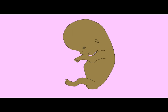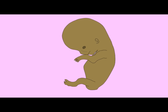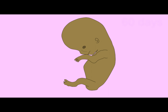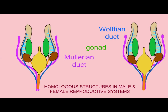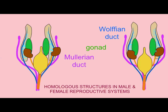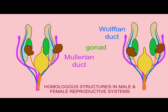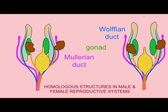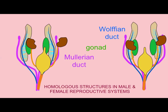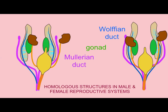Both males and females produce both during their lives. But during fetal development, testosterone and estrogen are more appropriate in the male fetus where the fetal testes are active than in the female fetus. There are many tissues which are homologous.